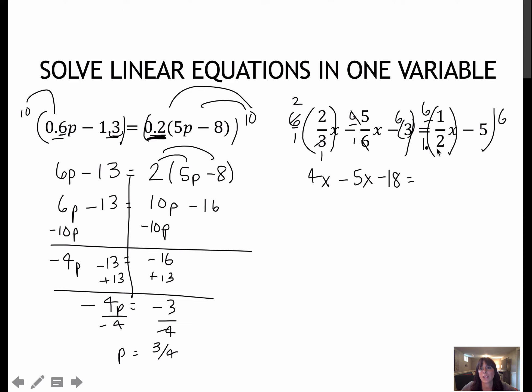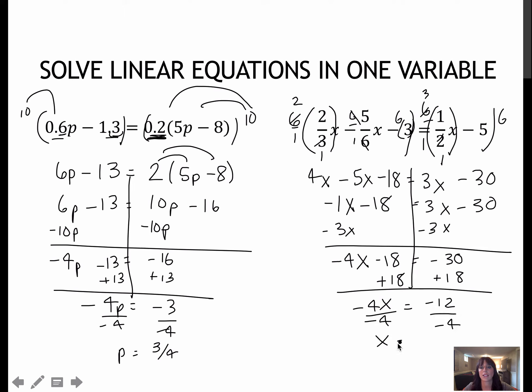So instead of having to change everything to common denominators and deal with it that way, you can clear fractions by multiplying by the least common denominator. Now I'm going to combine like terms, so 4x and minus 5x is minus 1x. I'm going to get all of the x's to one side. That gives me negative 4x minus 18 equals negative 30. I add 18 to each side, which gives me negative 4x equals negative 12. And divide by negative 4 to get x equals 3. Again, on all of these, you could do a check by plugging those values back in.